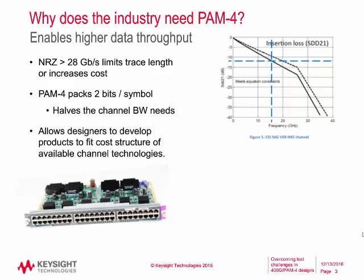As NRZ designs increase above 28 gigabits per second, trace lengths are limited unless you go to far more exotic and costly material. So the benefit of PAM-4 is that you can pack two bits per symbol and effectively halve the channel bandwidth while getting the same throughput.